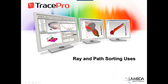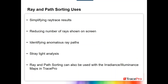As you can see, there's a lot you can do with the ray and path sort tools. They give you a lot of flexibility, especially in organizing data into a usable format where you can start to make sense of the results. Some of the basic uses that pop to mind: simplifying ray trace results, reducing the number of rays shown on screen, identifying anomalous ray paths, stray light analysis (probably the biggest one), and using these with the irradiance and illuminance maps.